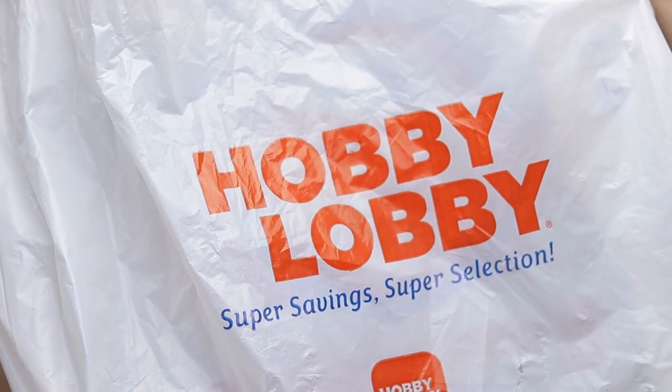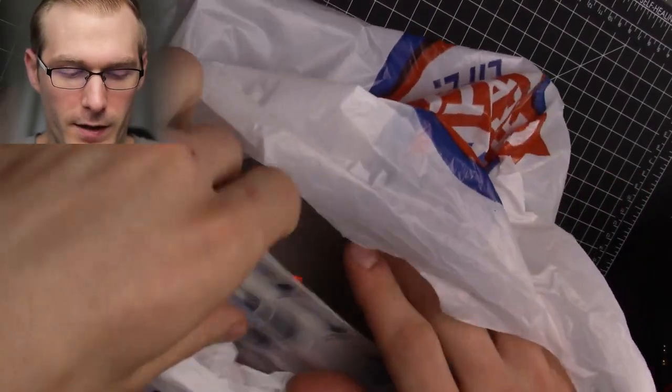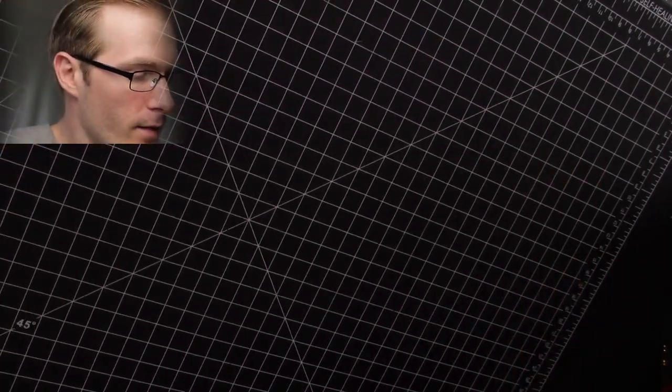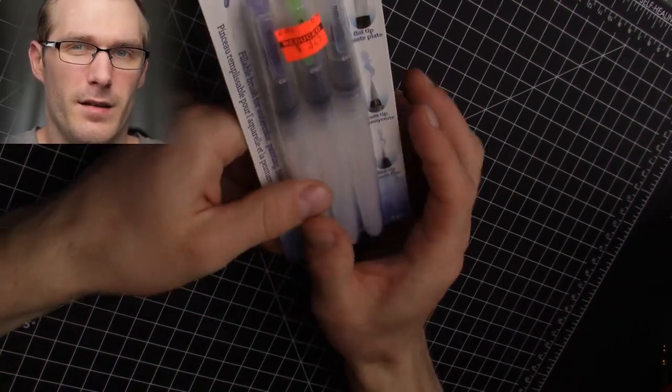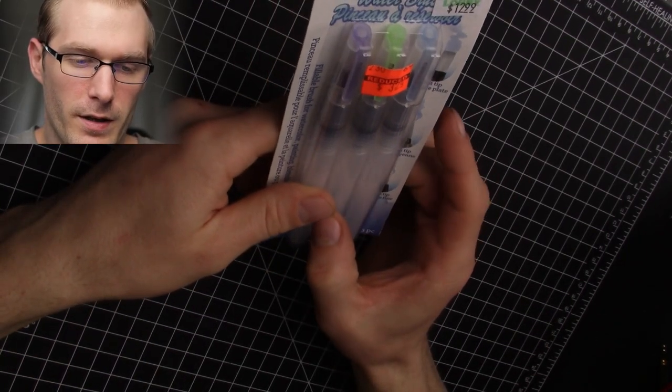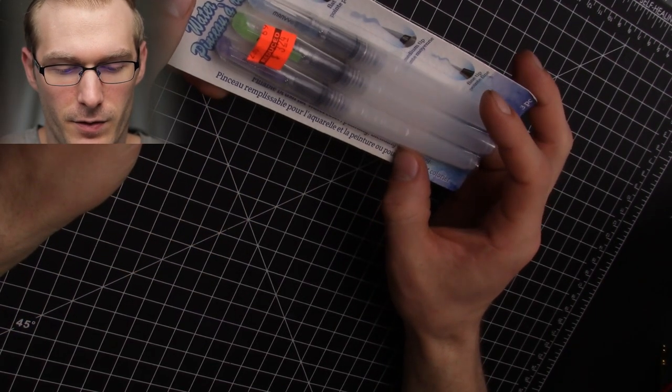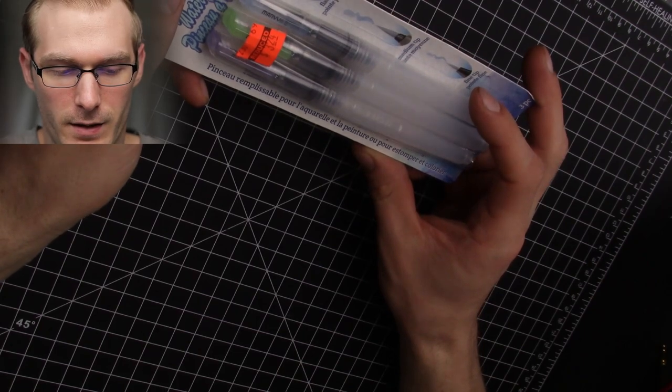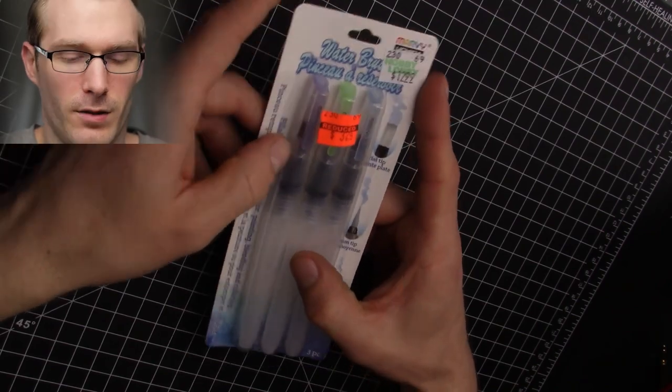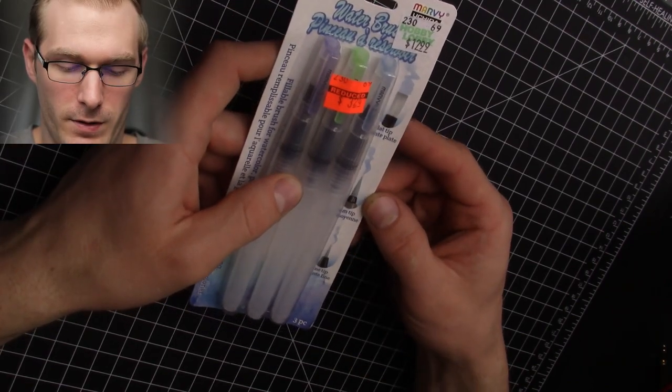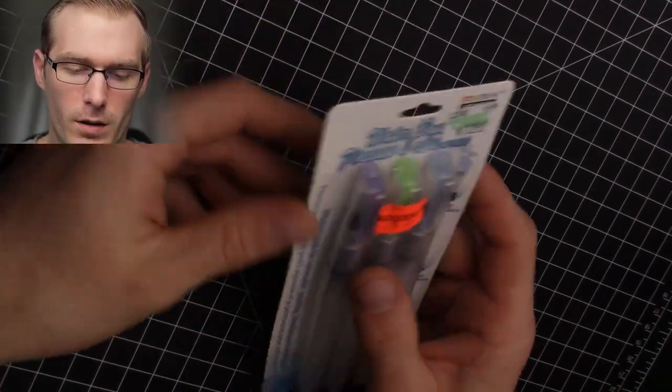I have here this big bag with all of the art supplies and we're going to take a look here. Now the first thing that I've got would be these here, these are the watercolor brush pens and you can use them for watercolor and painting, blending, coloring. You can put ink in these as well and it's got a flat tip, it also has a medium tip and a fine tip as you can see here.